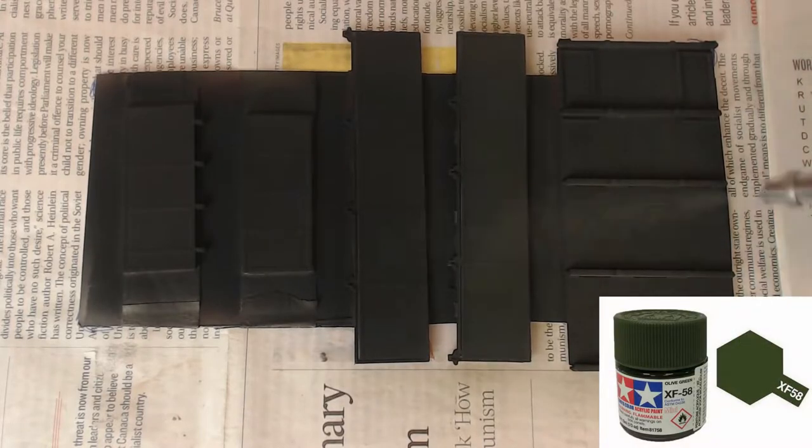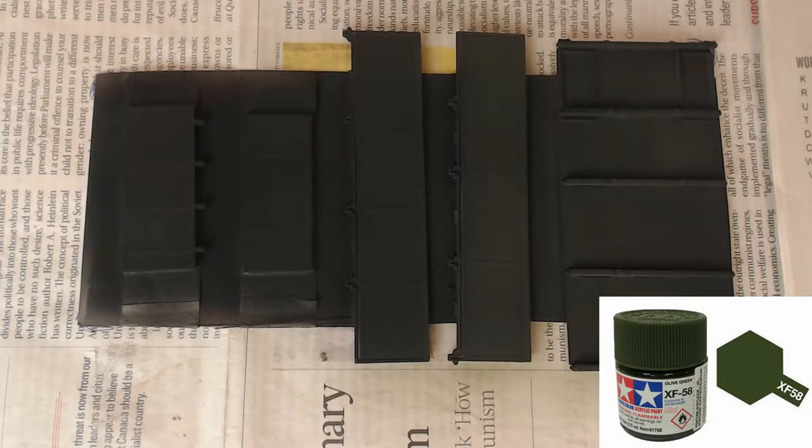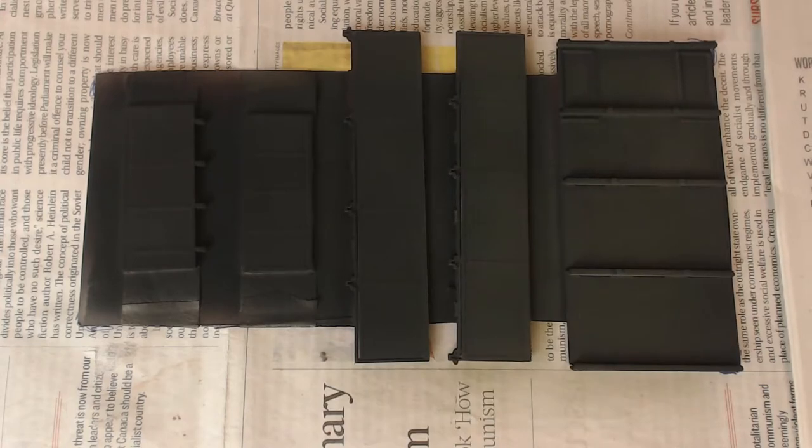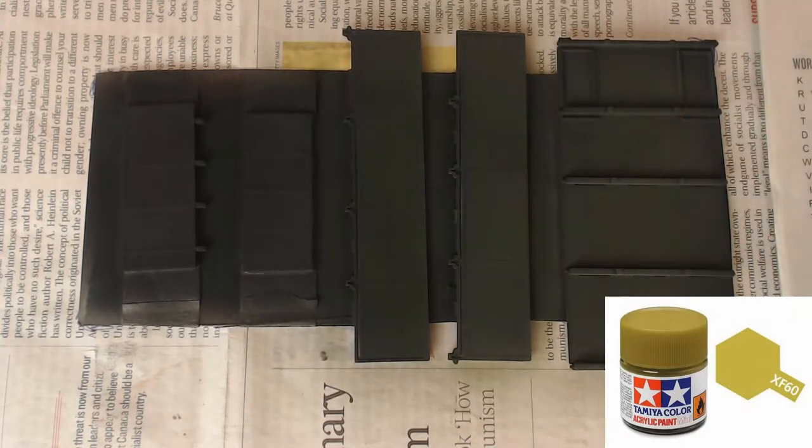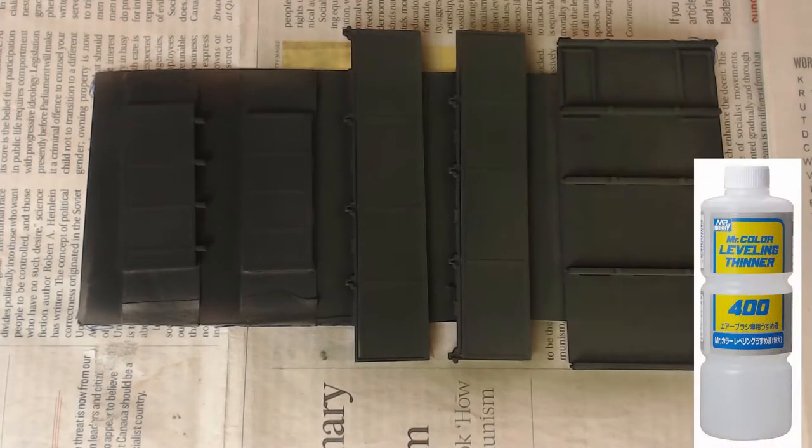We had a little Tamiya XF 58 olive green acrylic left over from our Grizzly project. I decided to use it on our Liberty. I lightened the green with a little Tamiya XF 60 acrylic. To thin the paint for airbrushing I tried this Mr Hobby leveling thinner.